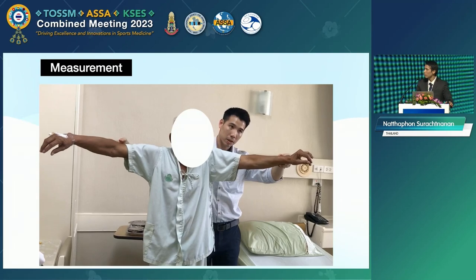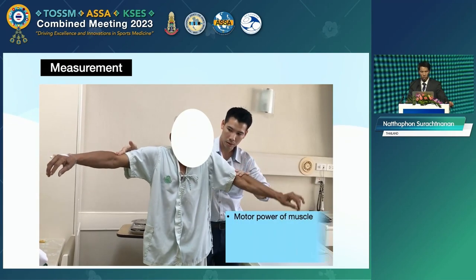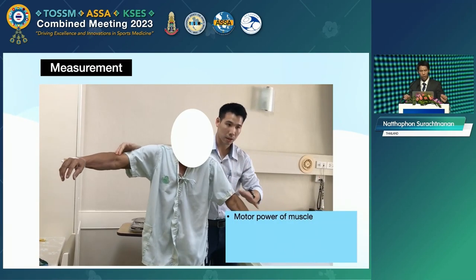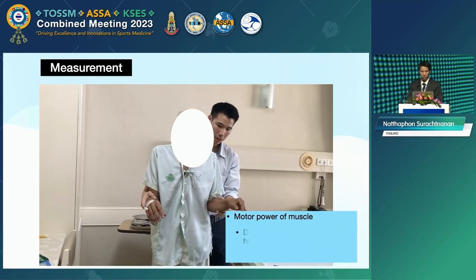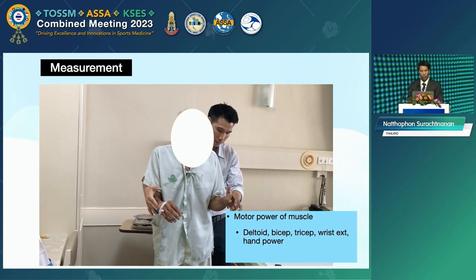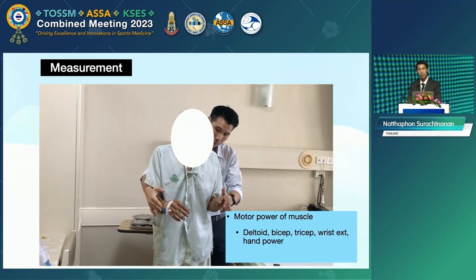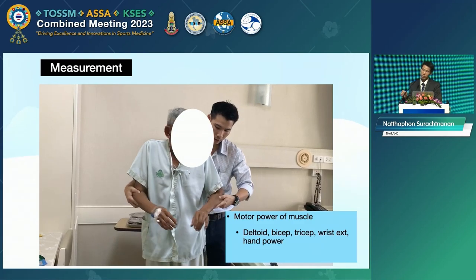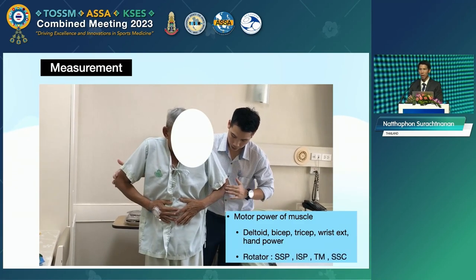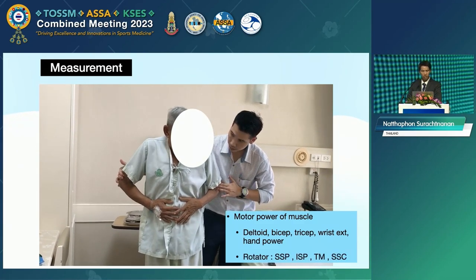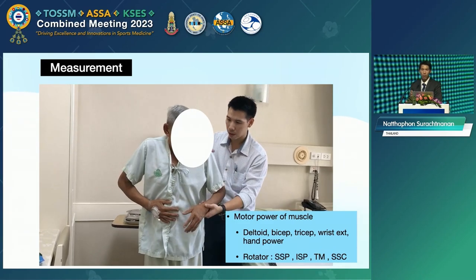We test the motor power of the muscles in the shoulder, forearm — including the deltoid, bicep, tricep, wrist power, and hand power. Another part is the rotator cuff muscles: supraspinatus, infraspinatus, teres minor, and subscapularis.